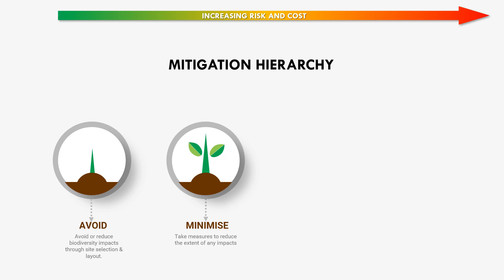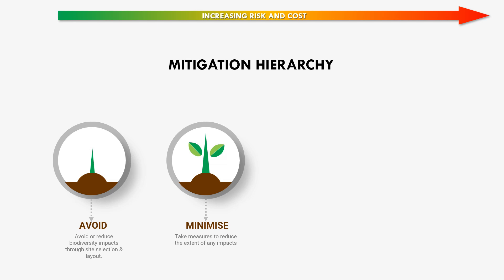Minimize: these are measures to reduce the extent of impacts on biodiversity. Where avoidance isn't feasible, it's essential to minimize negative impact by modifying the project design and strategy. All sensitive habitats must be avoided at all costs.